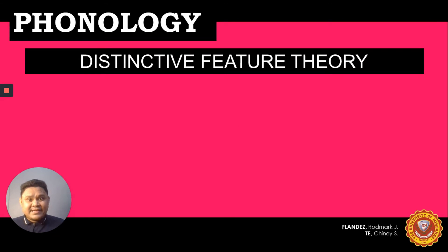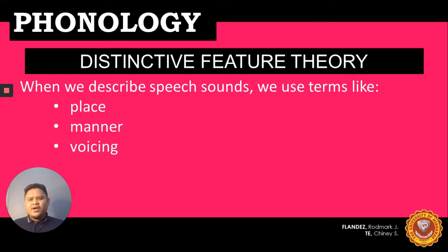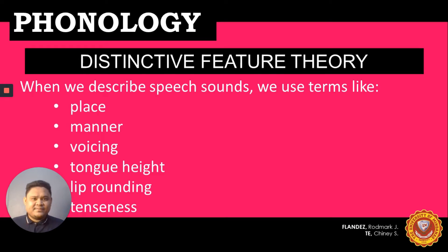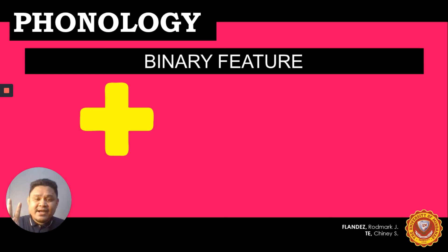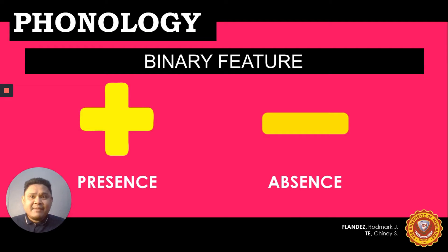Let's proceed to distinctive feature theory. When we describe speech sounds, we use terms like place, manner, voicing, tongue height, lip rounding, and tenseness. We have two symbols: the plus and the minus. The plus symbol means presence of a particular phonological feature, while the minus symbol means absence of the particular phonological feature.